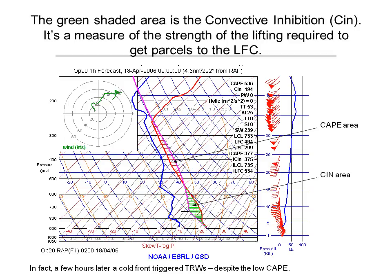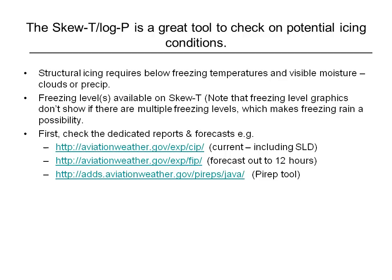In this particular example, in Rapid City, the convective inhibition is quite high, so you might say it doesn't look too bad. But out to the west there was a cold front, and a few hours later that cold front came through, wedged the air up near the surface, lifted it through this convective inhibition, and triggered a bunch of thunderstorms despite the initially high CIN. The skew-T log-P plot is also a great tool to check on potential icing conditions.